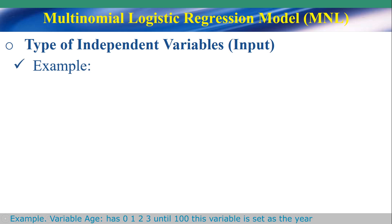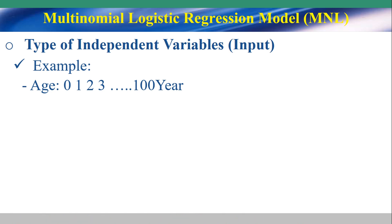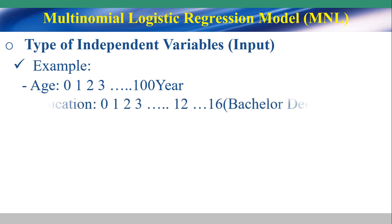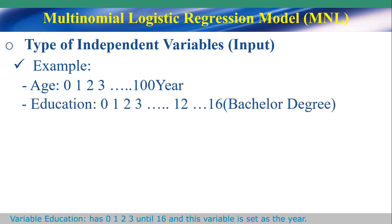For example, variable Age has values 0, 1, 2, 3 until 100. The variable is set as the year. Variable Education has values 0, 1, 2, 3 until 16, and the variable is also set as the year.